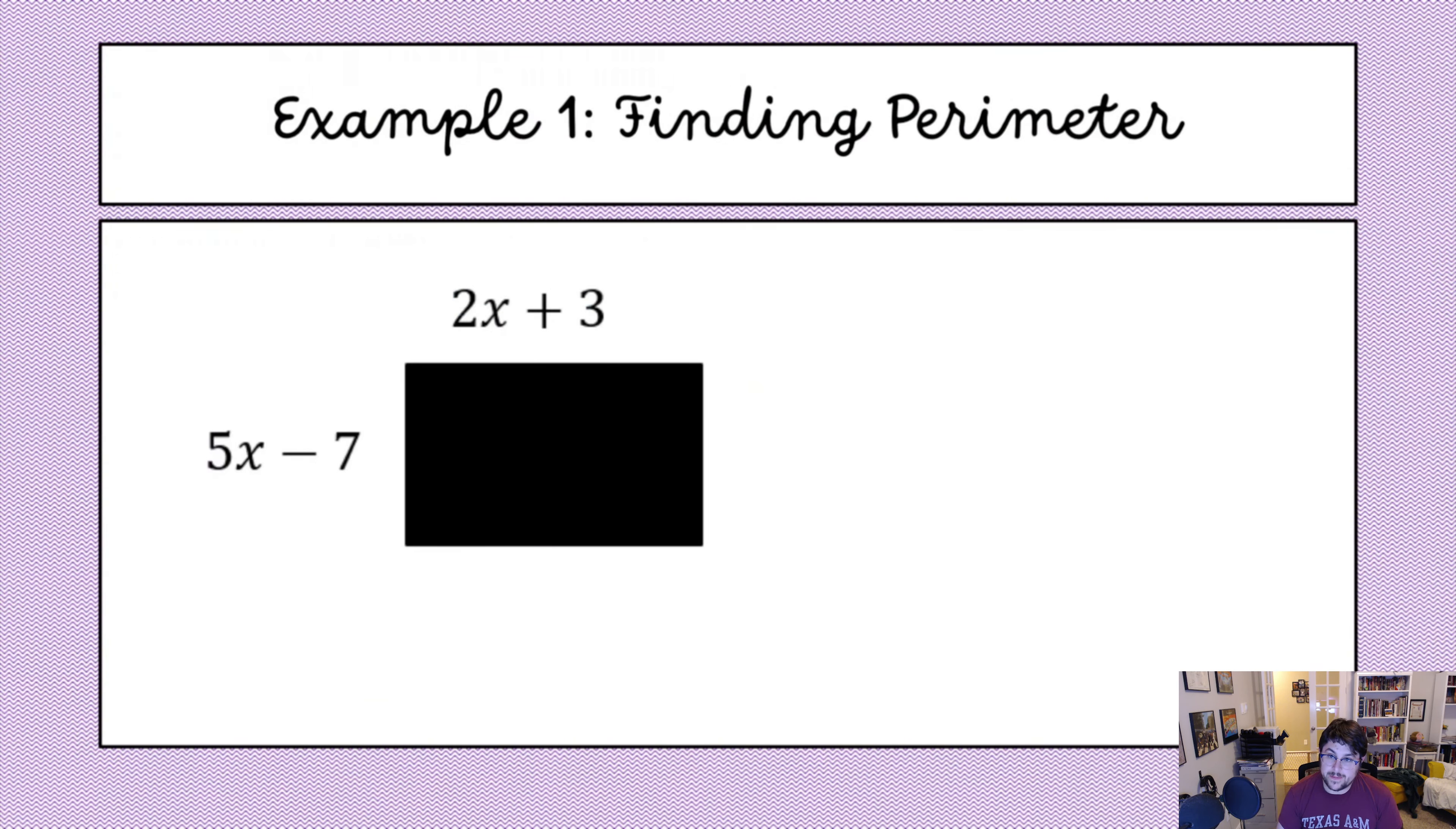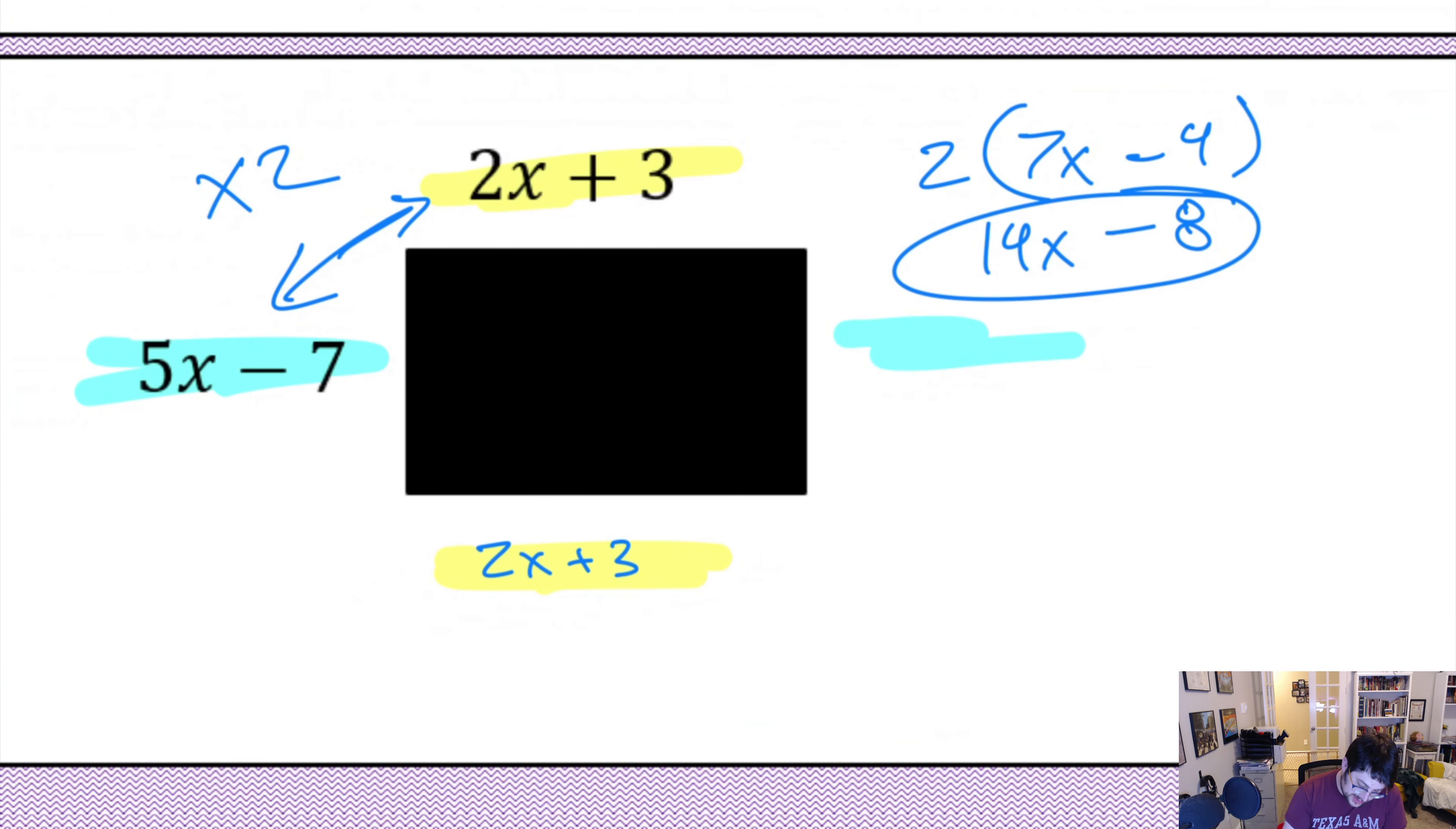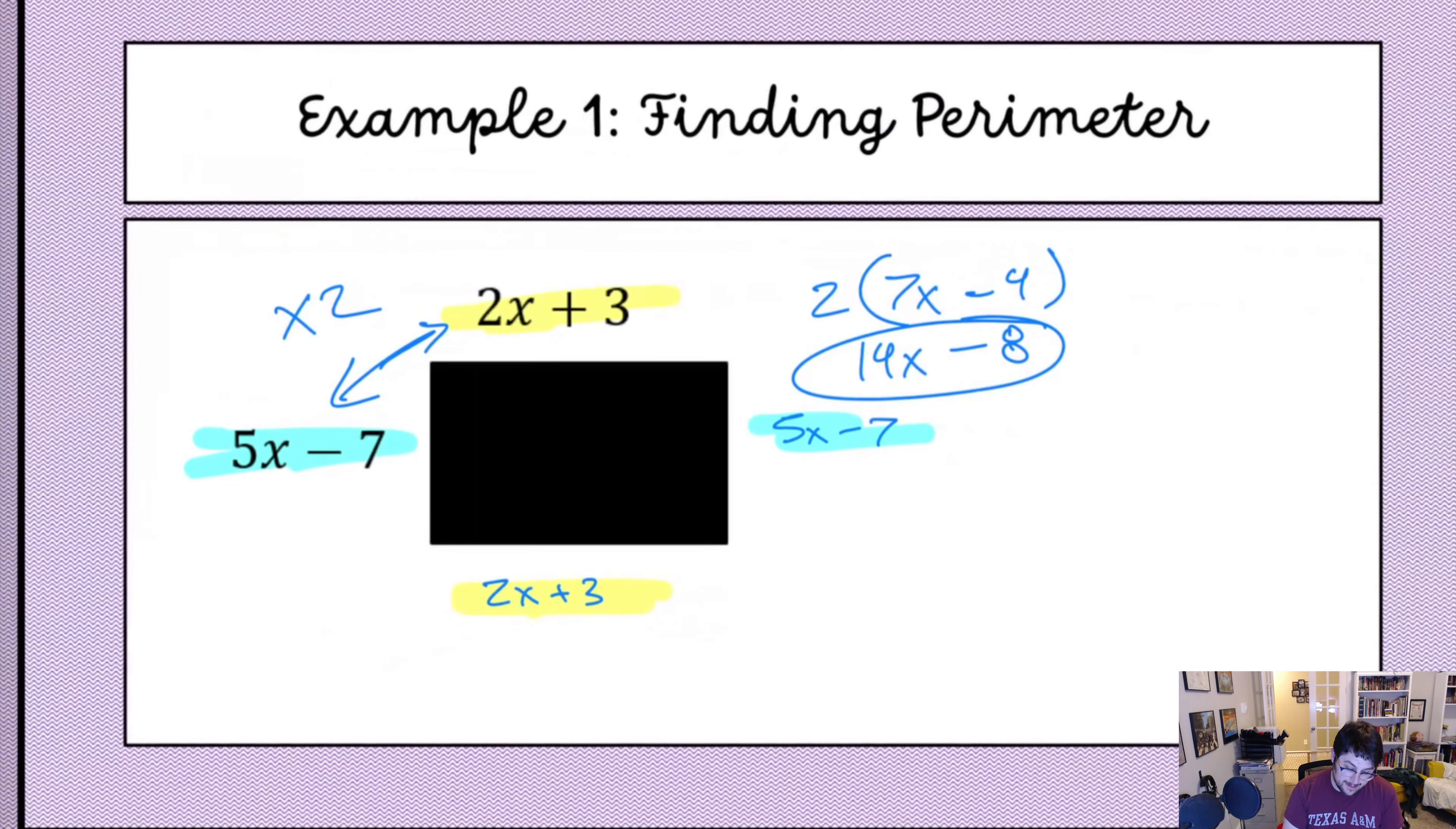All right. Let's go on. So, if we want to find perimeter, we need to add up all the sides. Now, in this case. Okay. Here we go. This side and this side are the same. And this side and this side are the same. So, I could either add up all the sides together. Or I could just add up these two sides and then multiply it by 2. I think I'm going to do that instead. Now, if I'm adding these, I need to add like terms. So, 2x plus 5x gives me 7x. 3 plus negative 7 gives me negative 4. I'm going to multiply that by 2. That gives me 14x minus 8. That's our perimeter. Because again, this is also 2x plus 3. And this is also 5x minus 7. So, adding up all the sides will also get you that.